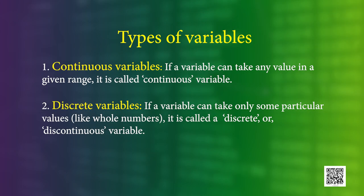We may rank individuals according to the quality of attributes. The ranks are sometimes used as their numerical values for purposes of analysis. There are two types of variables: continuous variables and discrete variables.